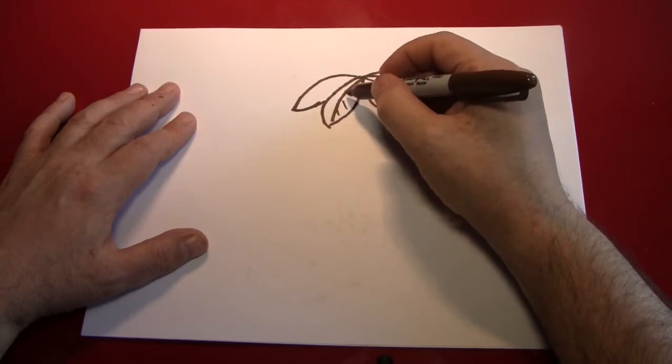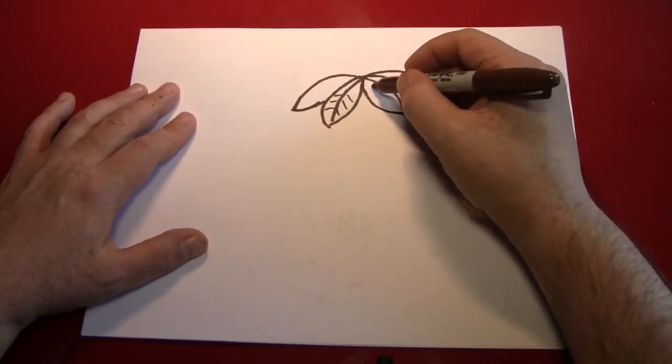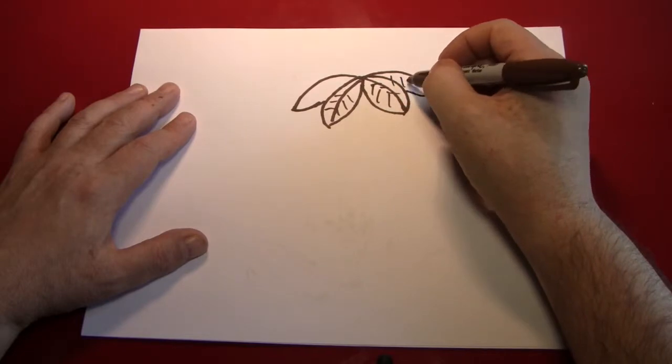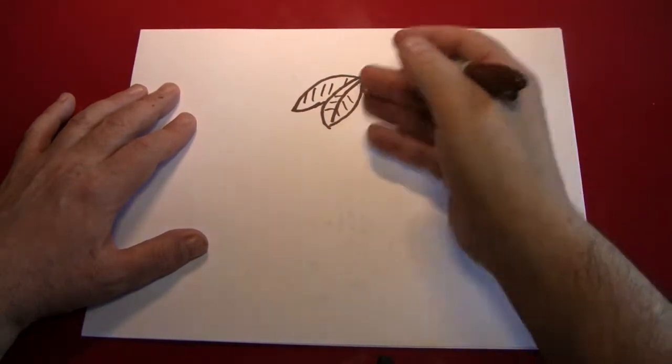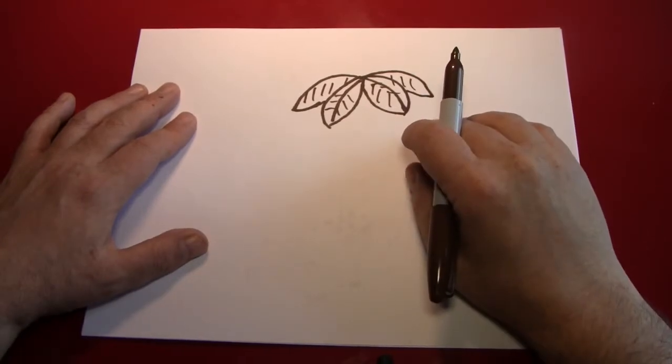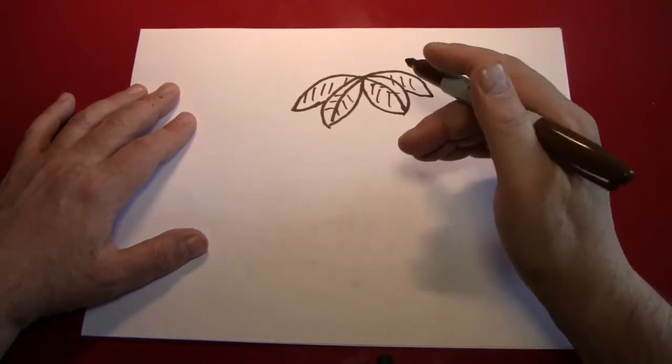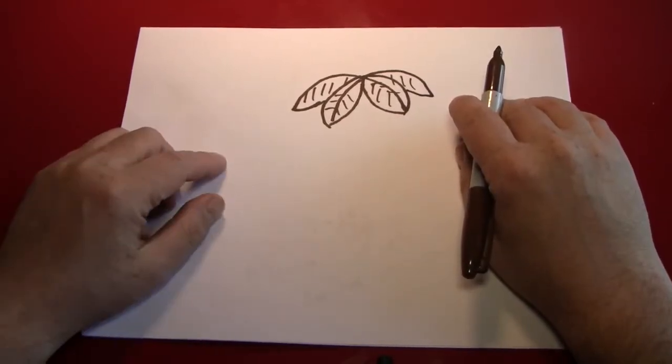Now a couple of little vein lines for the leaves as detail. And you can see we've already got the start of our palm tree or the top of our palm tree.